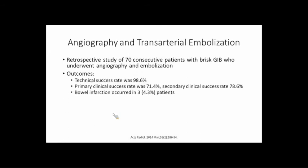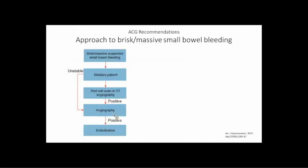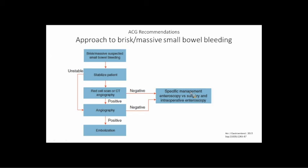One retrospective study of consecutive patients with a brisk GI bleed undergoing angiography embolization showed a technical success rate of 98%, a primary clinical success rate of 71%, and secondary clinical success rate of 78%. Bowel infarction occurred in 4% of patients — not insignificant given the outcome. Predictors of failure to achieve hemostasis at 30 days included severe anemia, coagulopathy, upper GI bleeds not responding as well to embolization, and having more than one embolized vessel suggesting a multifocal source.